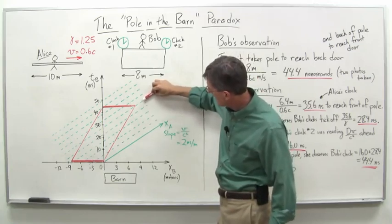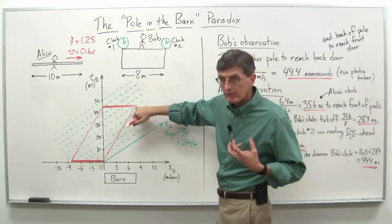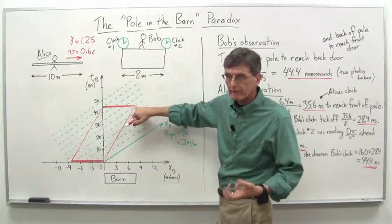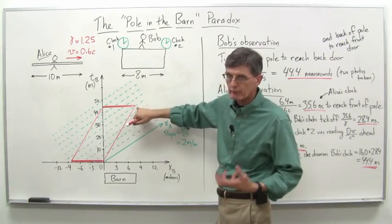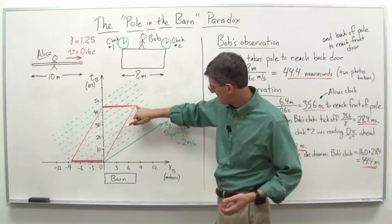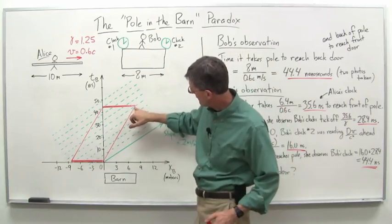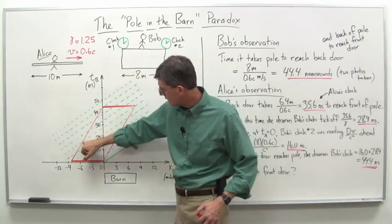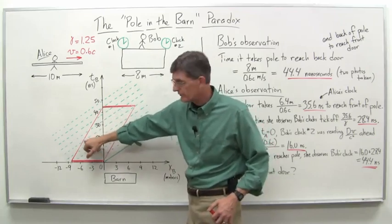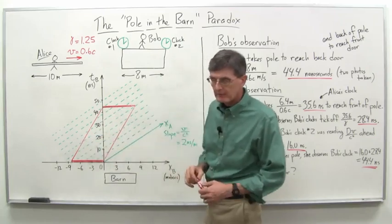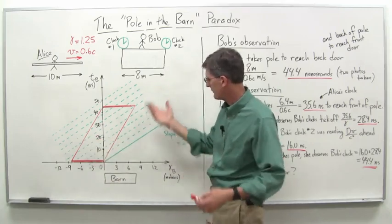Right here, at this time, we can see that the barn reaches the end of the pole, the front of the pole from her perspective, and that's when Bob would take the 44.4 nanosecond picture. But then also, if we look at the, if we trace the line of simultaneity back here, look where she sees the other end of the pole, it's still well outside the barn. Here's the barn right here, and so it's still back there.